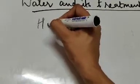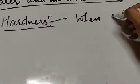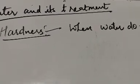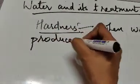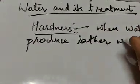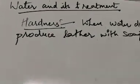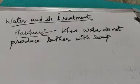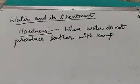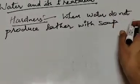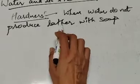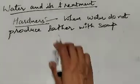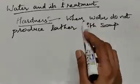What is hardness of water? Hardness is when water does not produce lather with soap. Pani jab jhag nahin banayega saabun ke saath, to us paani ko hum hard water bolte hain, aur yeh jo property hoti hai, that is known as hardness of water. Lather — L-A-T-H-E-R — means jhag. Soap ke saath jab paani lather nahin produce karega, that is known as hardness of water.